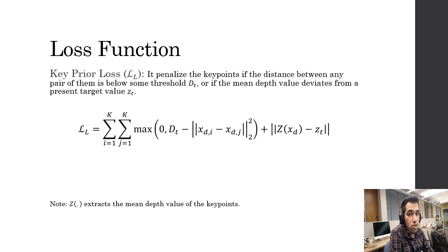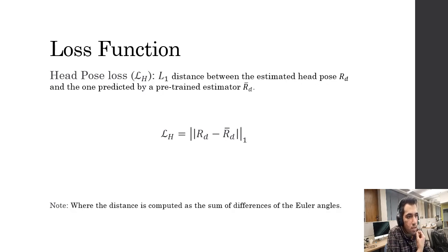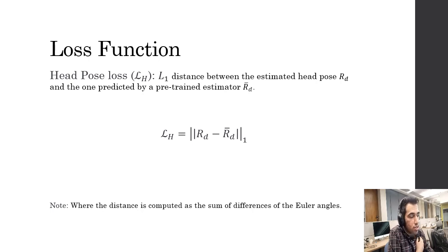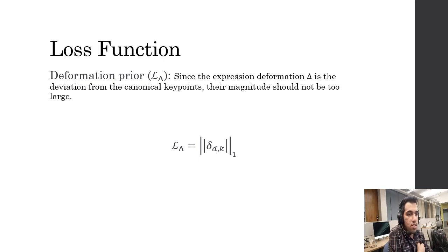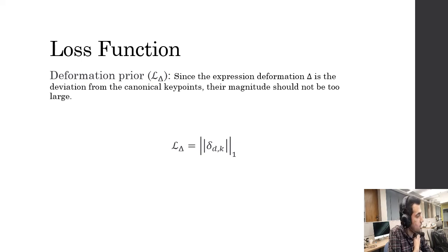In this paper, Dt is set to 0.1 and Zt to 0.33. The head pose loss LH computes the L1 distance between the estimated head pose RD and the one predicted by a pre-trained pose estimator network, called RD bar, which is treated as the ground truth. The L1 distance is computed as the sum of differences between the Euler angles of the matrices. Finally, the deformation prior loss L-delta: since the expression deformation is the deviation from the canonical key points, its magnitude should not be too large, so a loss is placed on its L1 norm.